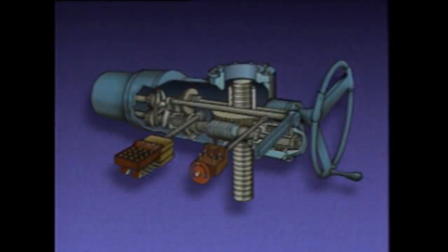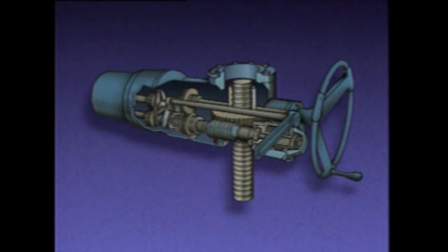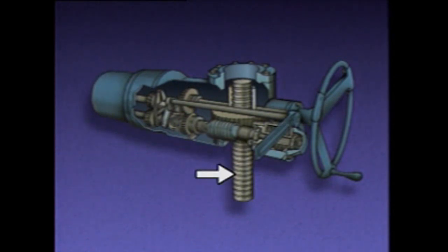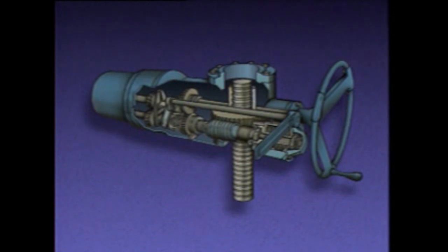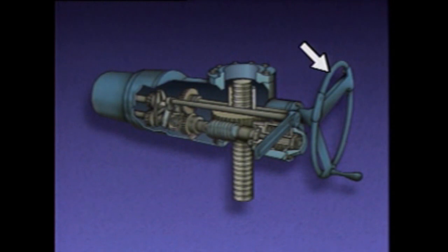When this motor operator is energized to reposition a valve, the motor drives the gears. The gears move the valve stem to position the valve. The lever is used with the hand wheel to position the valve manually in the event of a problem with some other part of the motor operator. Depressing the lever disengages the motor from the gearing and connects the hand wheel to the valve stem through part of the gearing.